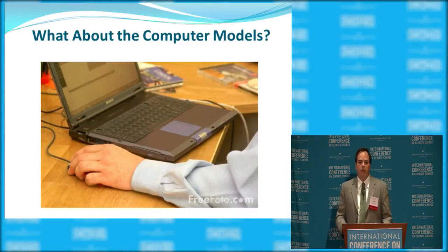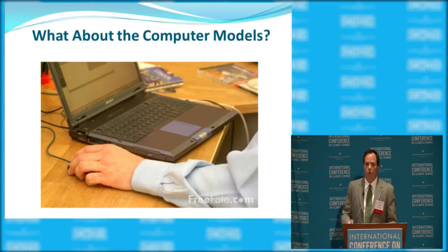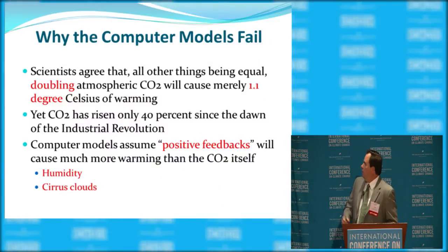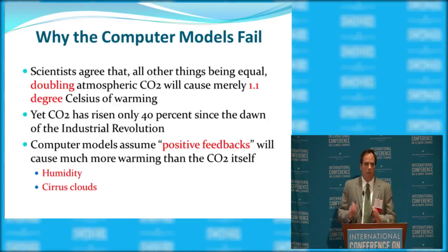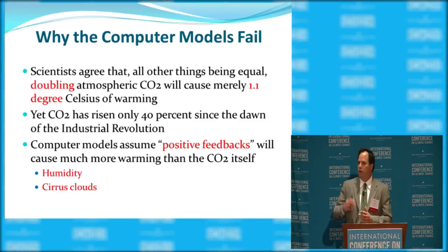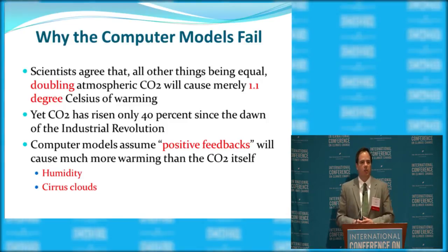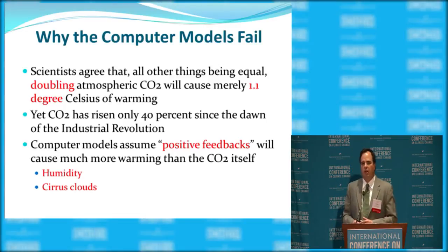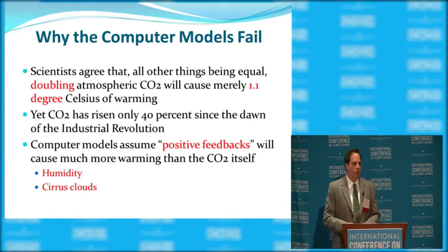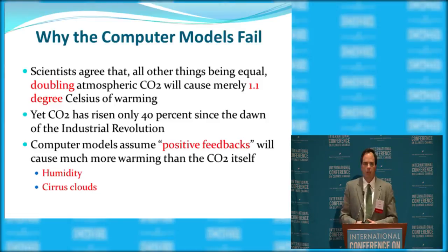Why do the computer models project so much warming, and why hasn't the predicted warming occurred? As a matter of objective fact — scientists agree regardless of where they stand on the issue — if you double the amount of carbon dioxide in the atmosphere from pre-industrial levels, you would get 1.1 degrees Celsius of warming, all other things being equal. We also know that since the dawn of the Industrial Revolution, we've seen an increase of about 40% in atmospheric CO2. So 40% of 1.1°C means carbon dioxide emissions have probably caused about 0.4 degrees Celsius of warming since the Industrial Revolution.